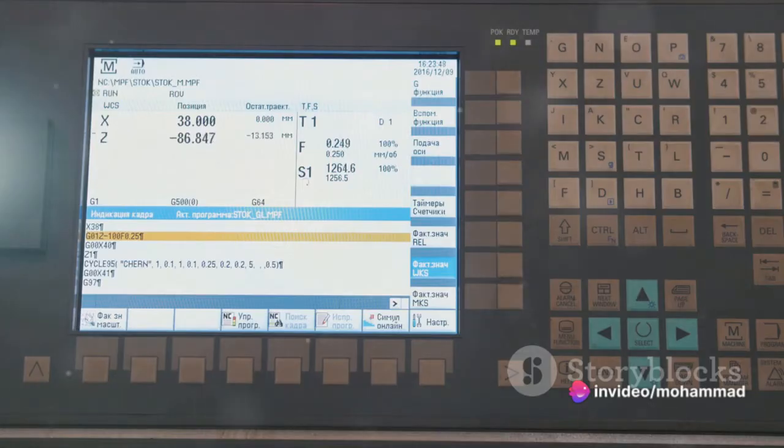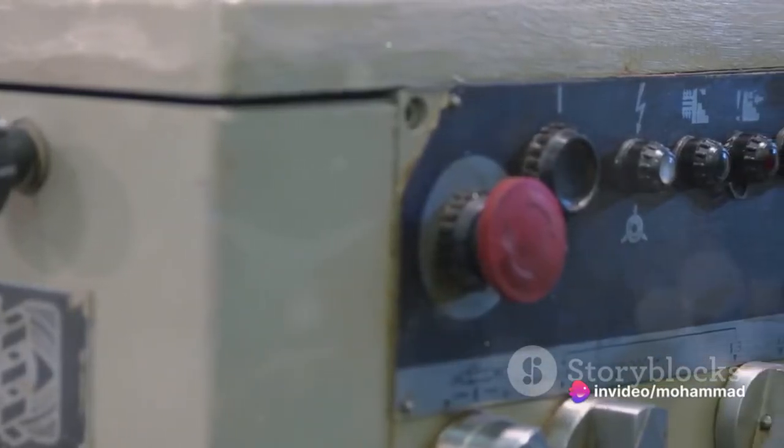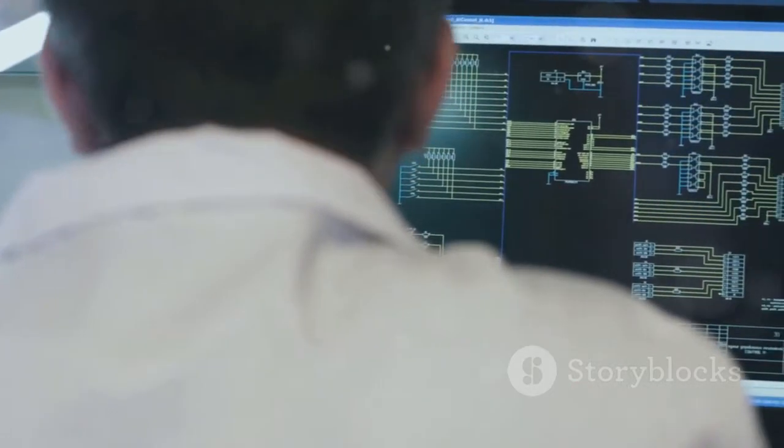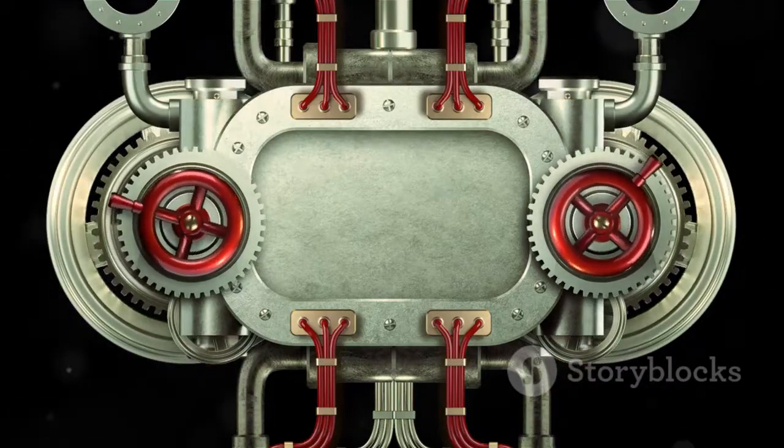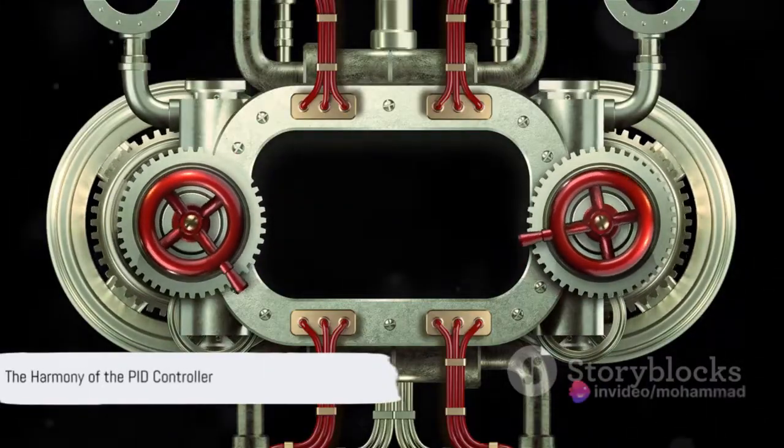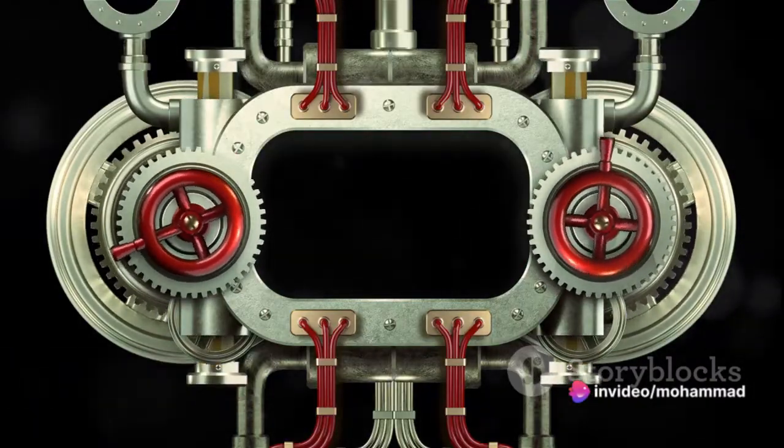Together, these three components form the PID controller, a crucial tool in maintaining process control in industries. The proportional component reacts to present errors, the integral component corrects for past errors, and the derivative component anticipates future errors. It's a delicate balancing act that keeps our modern industries running smoothly and efficiently.